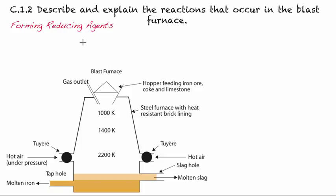So we're going to look now at the reactions that take place. There are quite a few of them, and you do need to know all of them. Let's start with how we are going to form the reducing agents that will allow us to isolate iron from the oxygen.